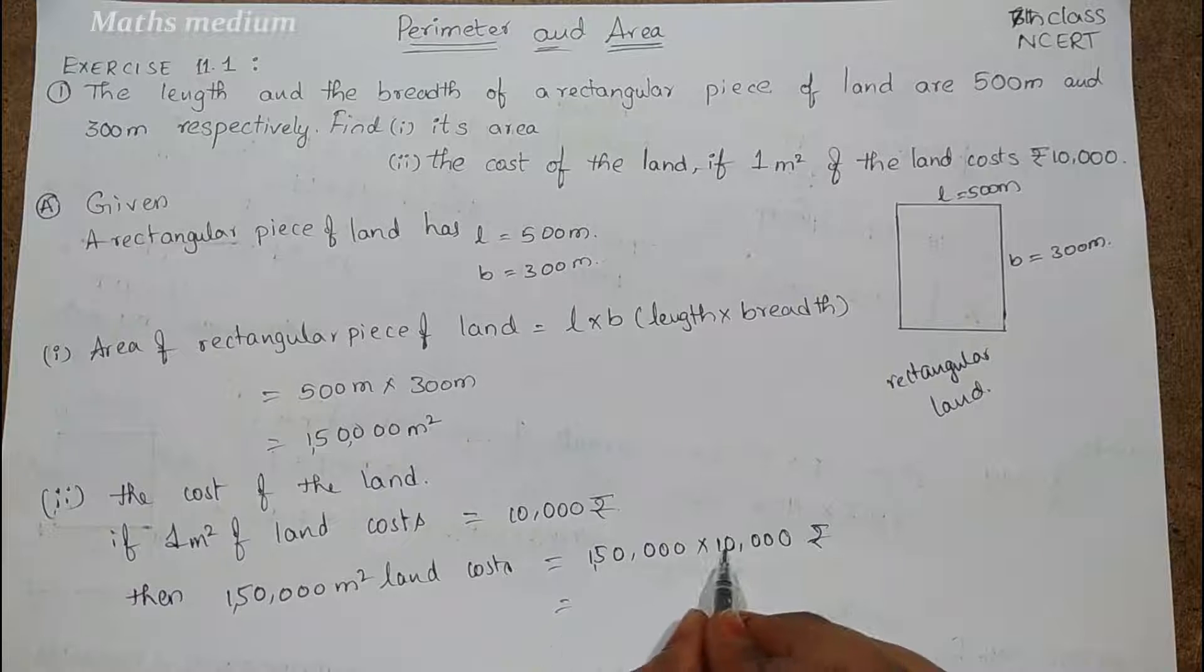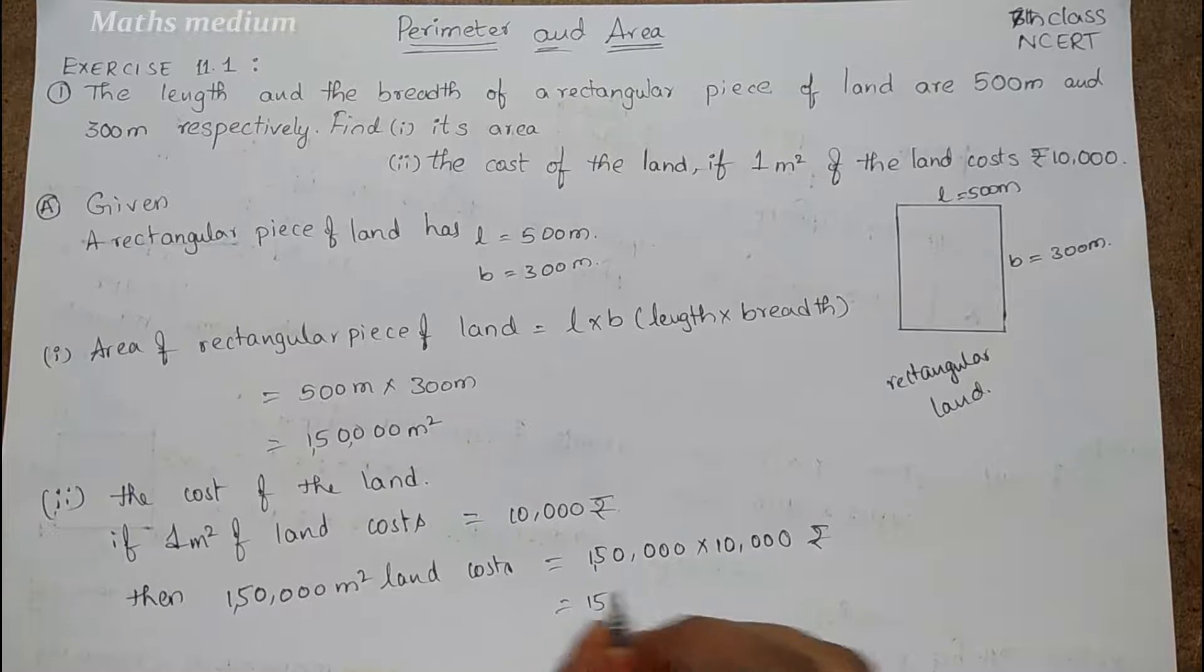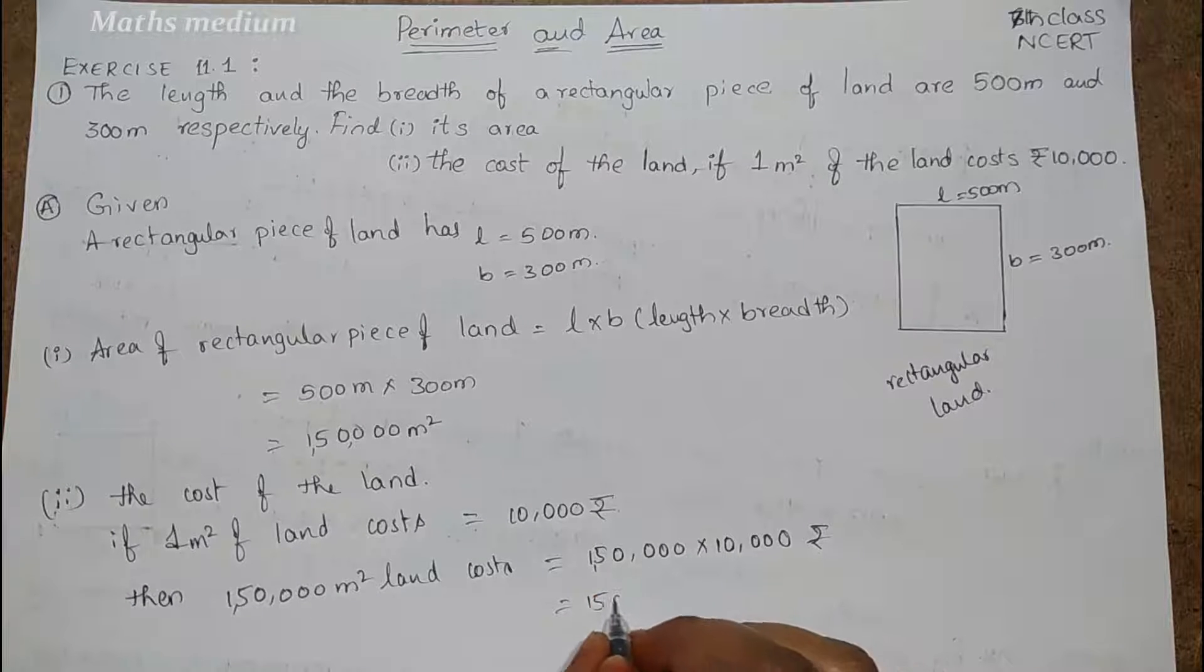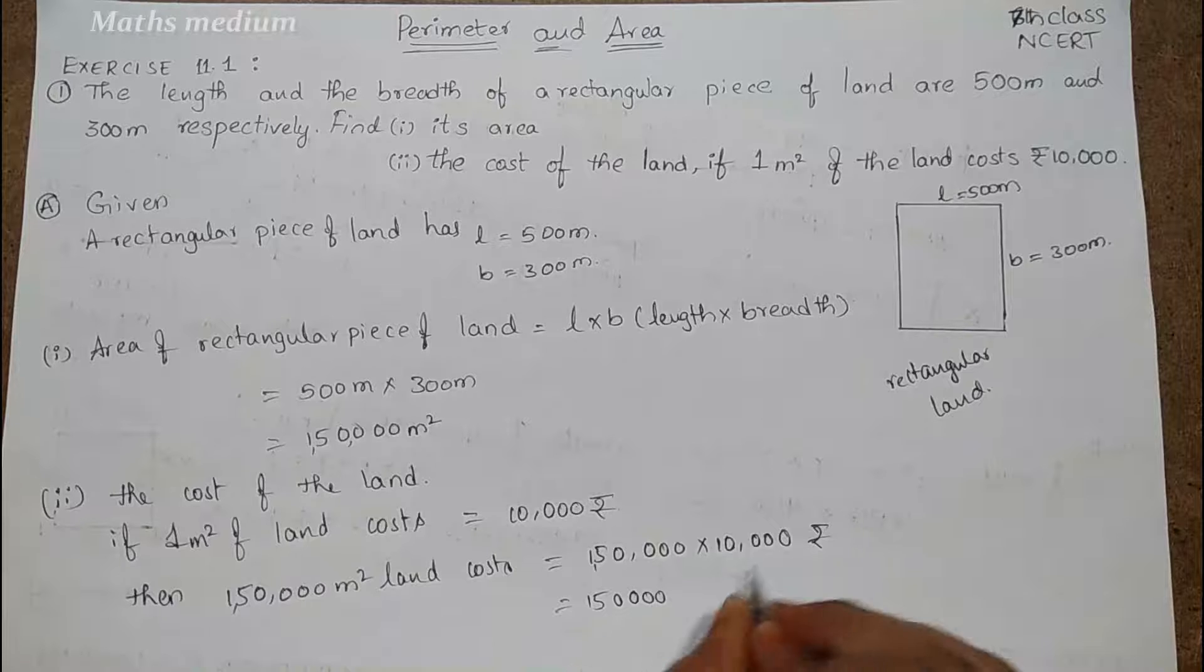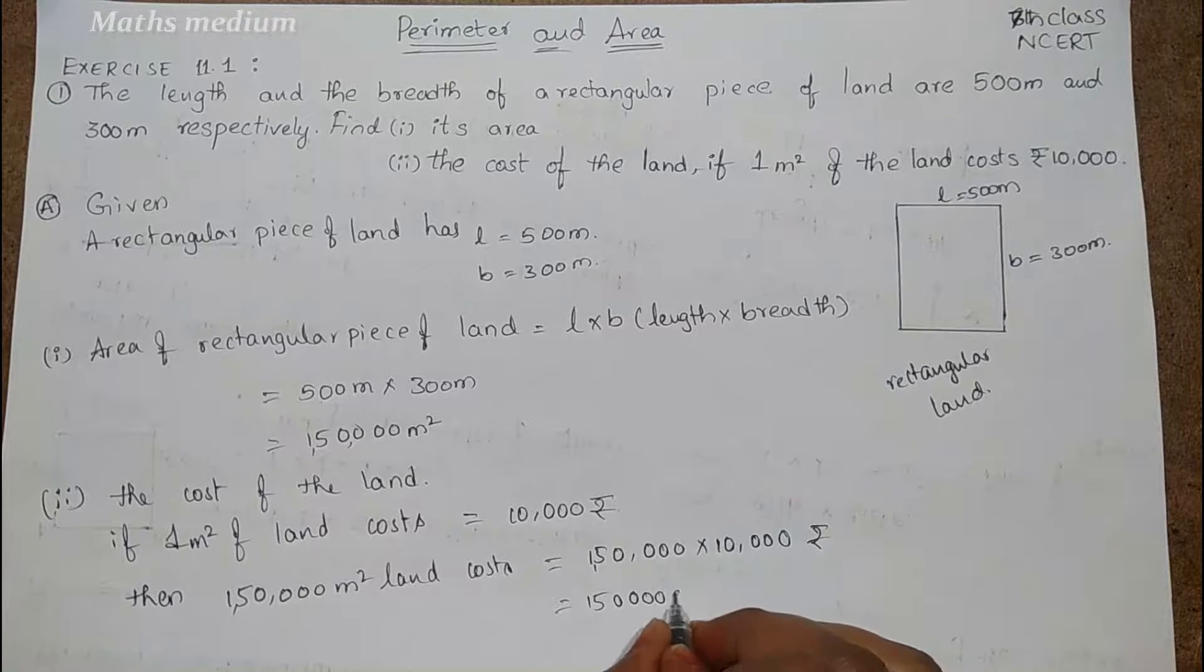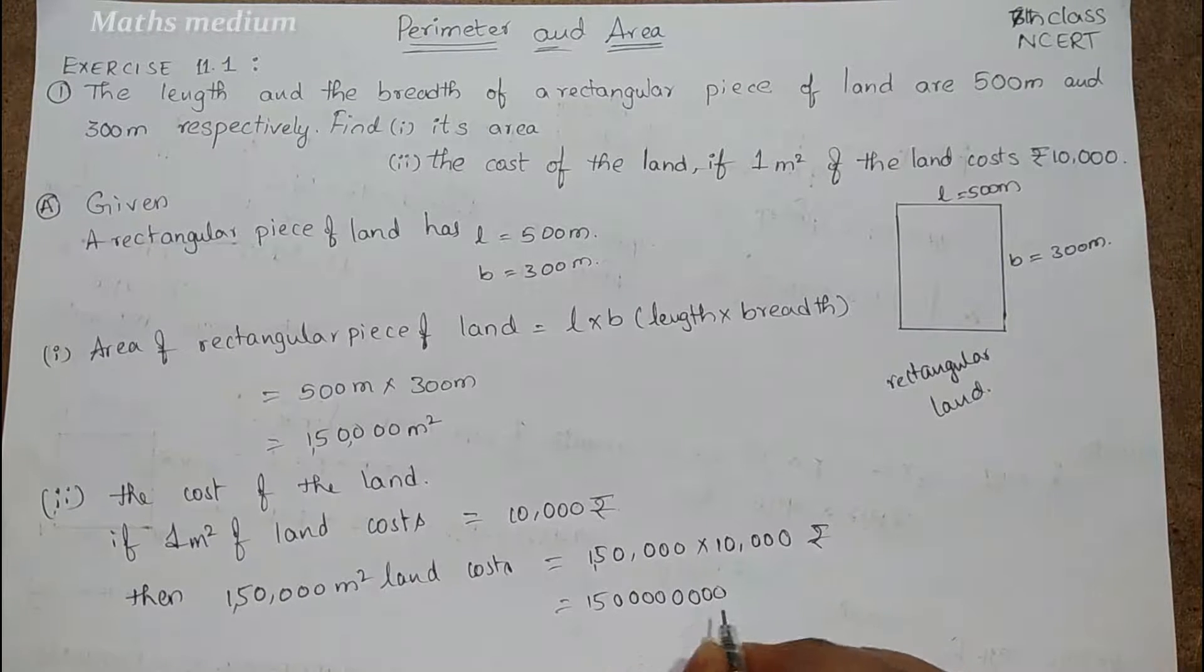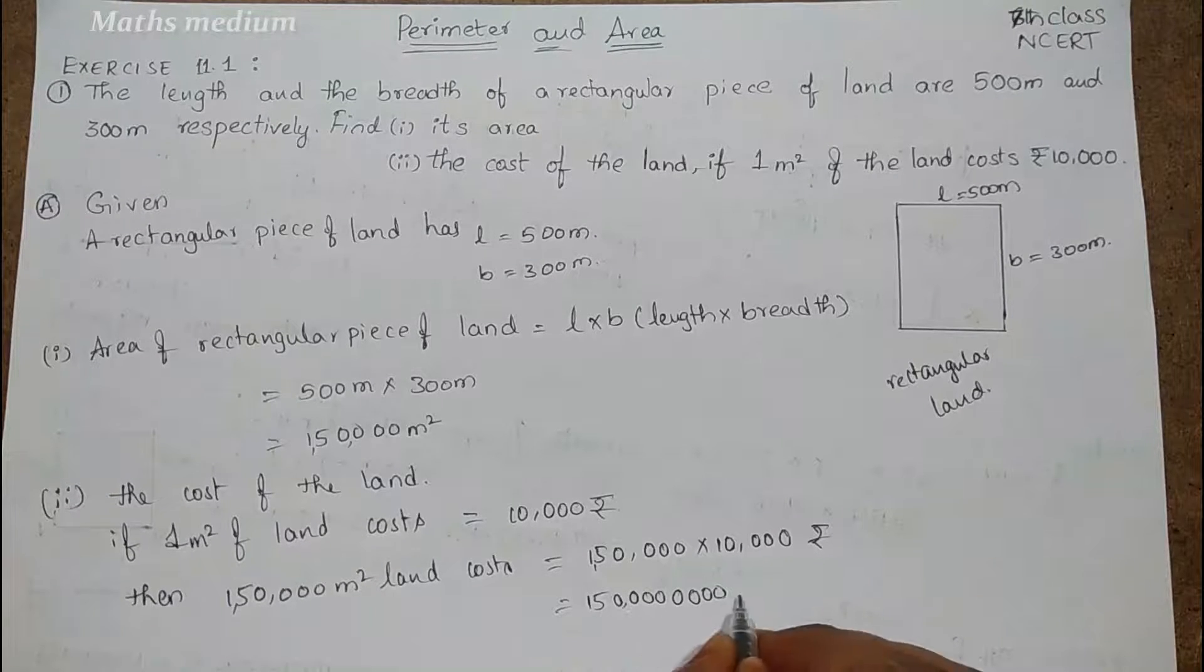Now again, 1 into 15 is 15, then 1, 2, 3, 4 zeros, and 1, 2, 3, 4 zeros, again 1, 2, 3, 4, and 1, 2, 3, 4. This is 150 crore rupees.